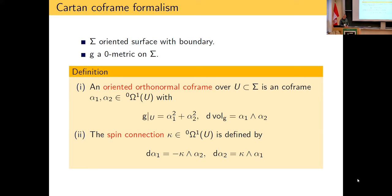The coframe formalism works as follows: you define the spin connection. Because α₁ and α₂ are one-forms, you can take their exterior differentials. Then dα₁ is some multiple of α₁ ∧ α₂, and dα₂ is a multiple, so you can find a unique one-form κ satisfying these equations. You write κ as a function times α₁ plus a function times α₂ and determine those functions from the equations. This one-form is called the spin connection.